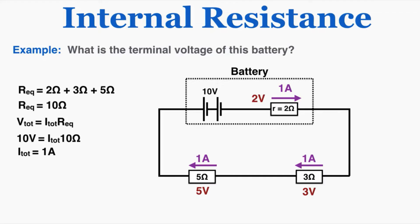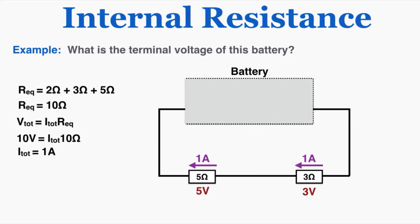And inside of the battery there's a voltage drop of 2. So what that means is that if we just pay attention to what's happening outside of the battery, the battery is delivering 8 volts to the outside of the circuit. We would say that the terminal voltage of this battery is 8 volts — from one terminal of the battery to the other it delivers 8 volts, there's an 8 volt drop in electrical potential.